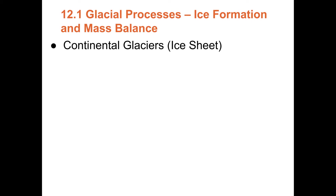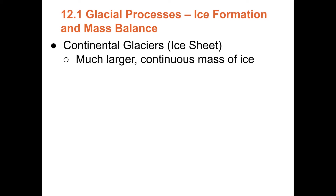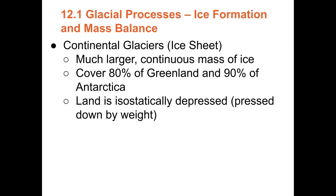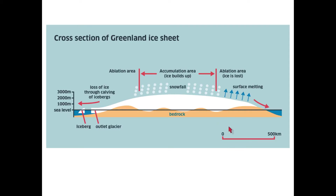Continental glaciers — the largest types are called ice sheets, like what we see in Greenland and Antarctica. Ice covers 80% of Greenland and 90% of Antarctica. The ice averages about 2,000 meters (6,000 feet) thick — so thick that it's actually pushing the surface of the land below sea level, depressing Earth's crust. A cross-section of Greenland shows the weight of ice has depressed the continental crust below sea level in the interior.